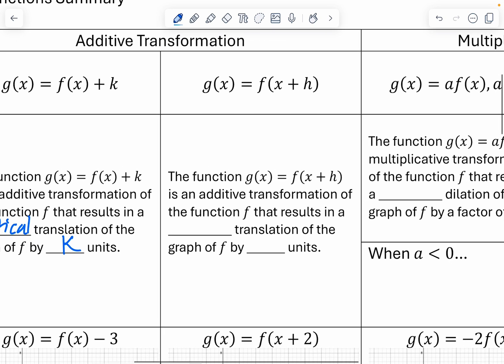Then we could have another additive transformation, and that's when we do f of x plus h. The function g(x) equals f(x plus h) is an additive transformation of the function f that results in a horizontal translation of the graph by, and since this is a plus h, it does the opposite of what you would expect when it's there with x. So it's going to be a translation by negative h.